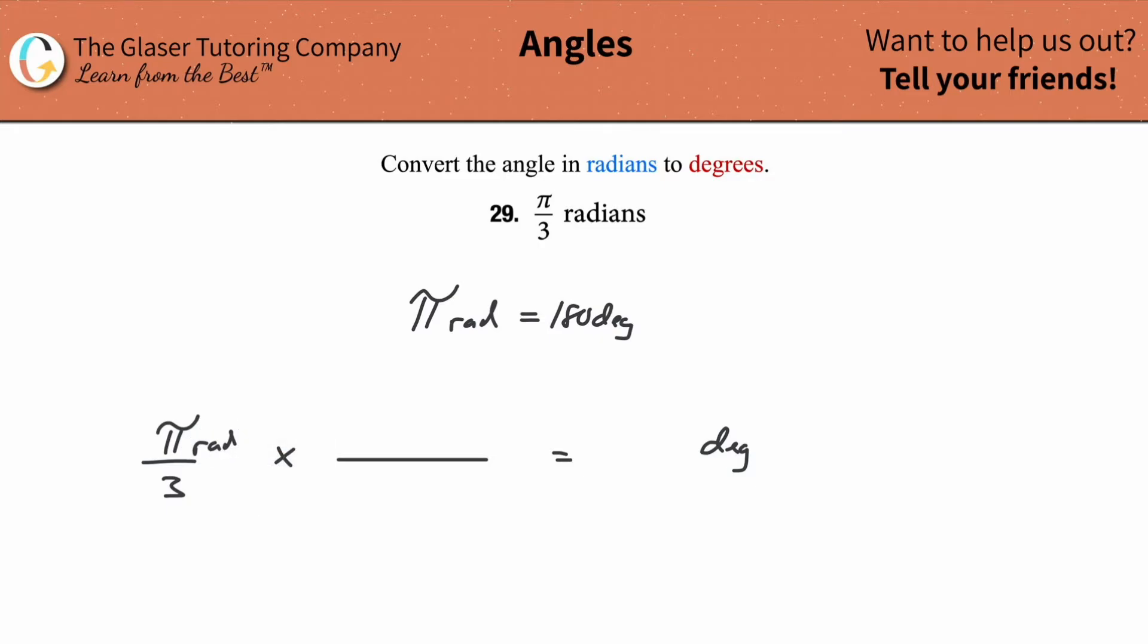So what that means is that now I go back to my conversion fraction here, or my known relationship. And I'm going to take the radian value and plug it in the denominator. Notice what's going to happen. The radians go bye-bye. That's why I want to do it.